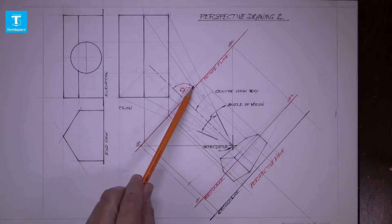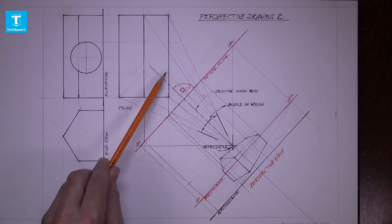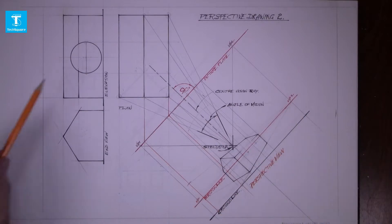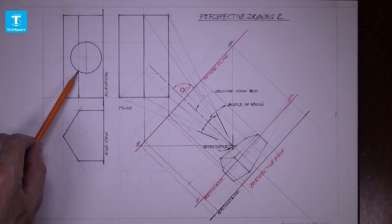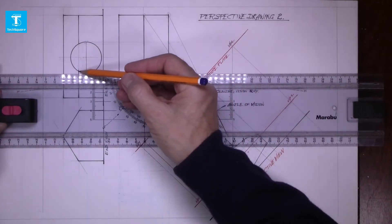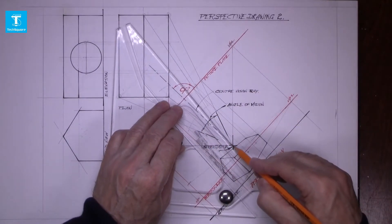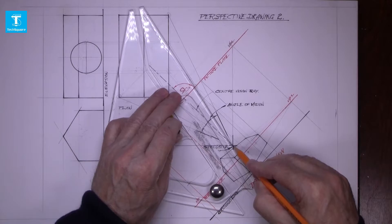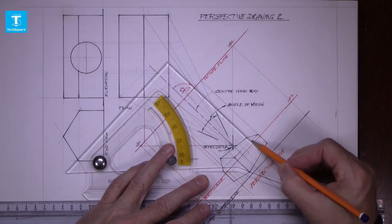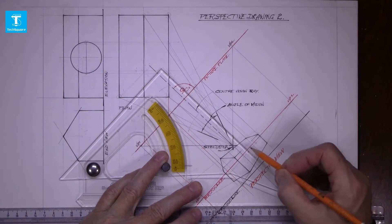So if we bring down this point, that gets us a point on that line. Bring down the other point and that gets us the second point on the line. Now we're going to get the two points at the gutter here. Bring those two points across to the front of the building, join to the spectator. Where they cross the picture plane, bring them down to where the eave is, and that's the two points there.